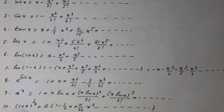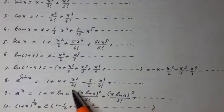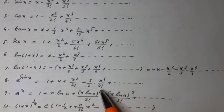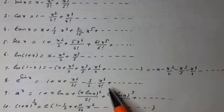e to the sin x is equal to 1 plus x plus x squared over 2 factorial minus 3 over 2 times x to the power 4 over 4 factorial plus so on.